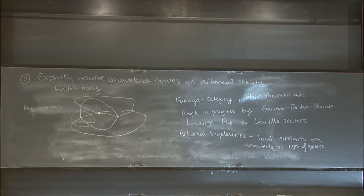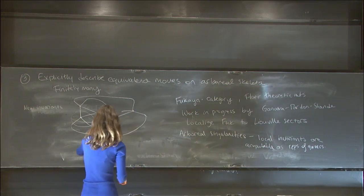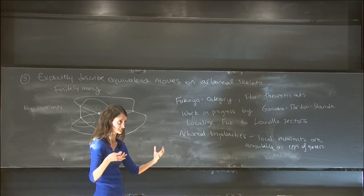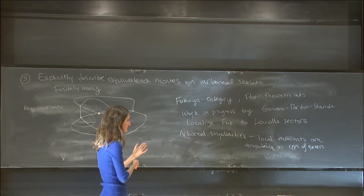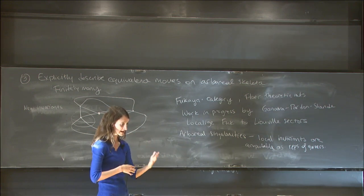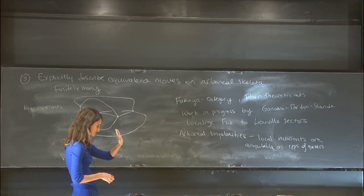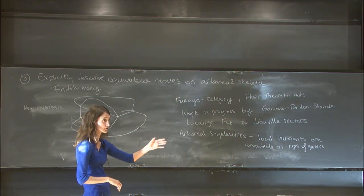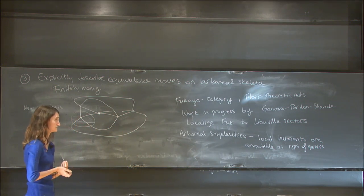Regarding the arboreal result and generation: they prove generation. I'm working on the geometric side with the manifolds to show that there are nice skeletons. What they're proving is that if you have a nice skeleton, then the transverse fibers to the smooth Lagrangian strata will locally generate the Fukaya category.